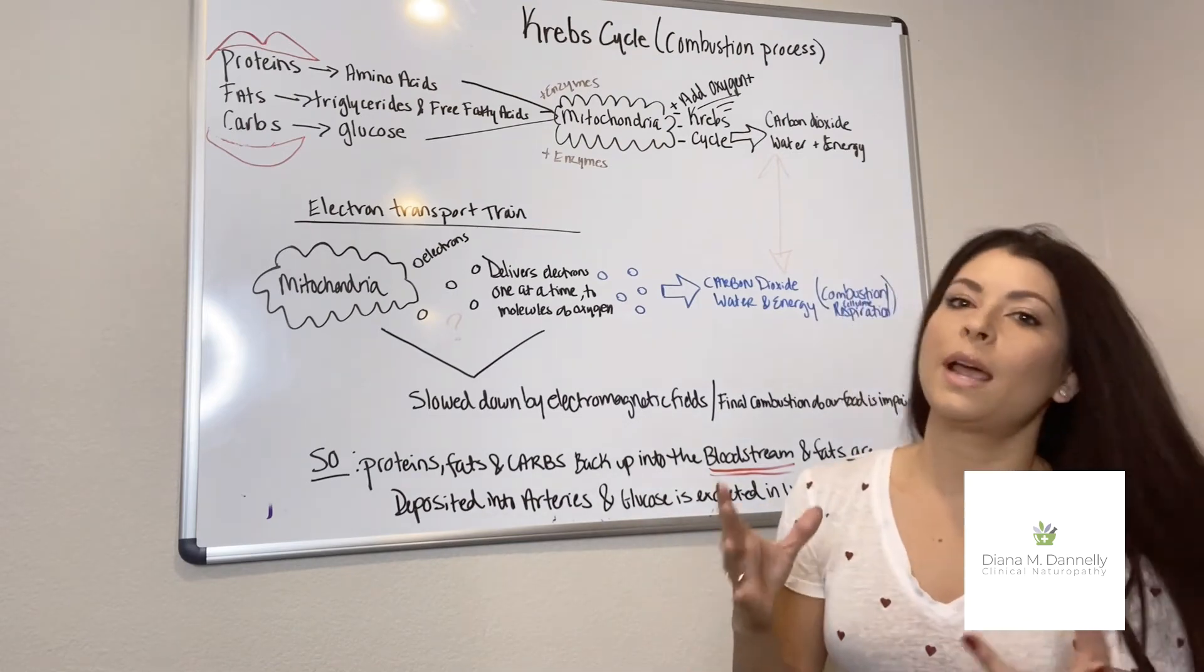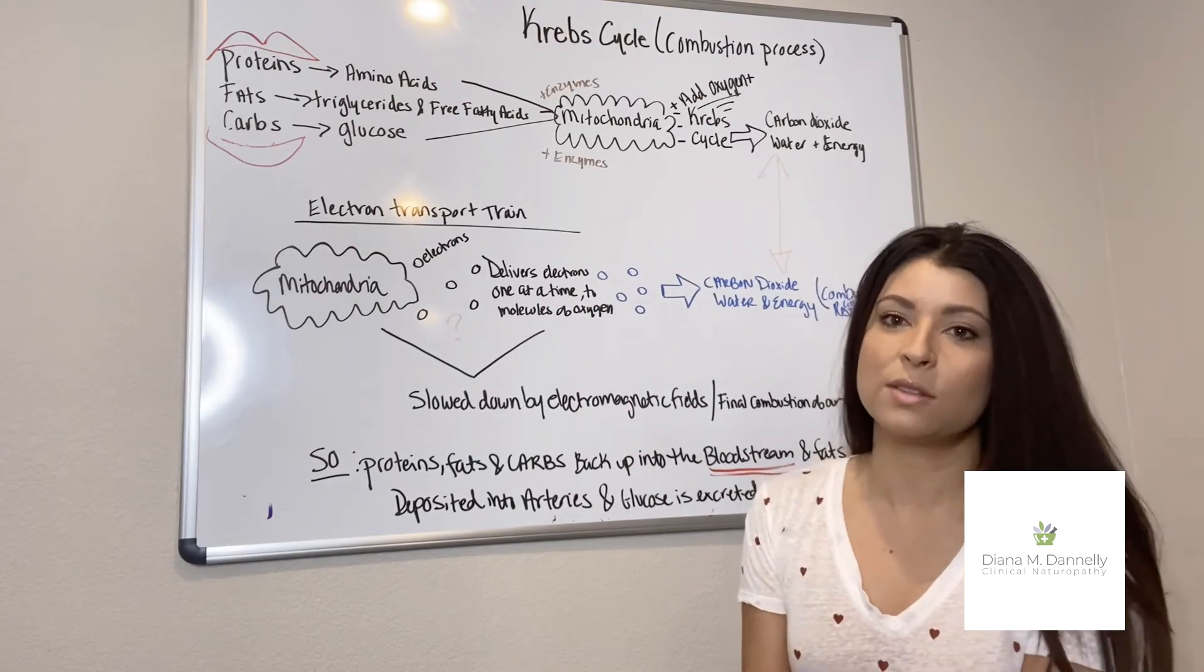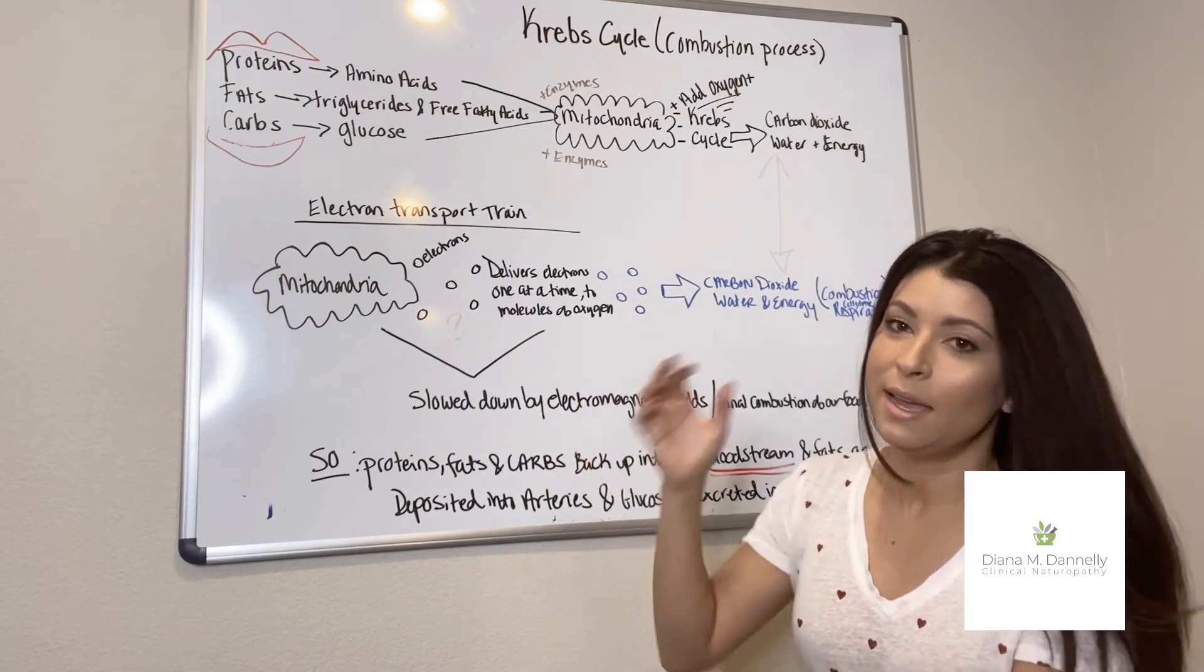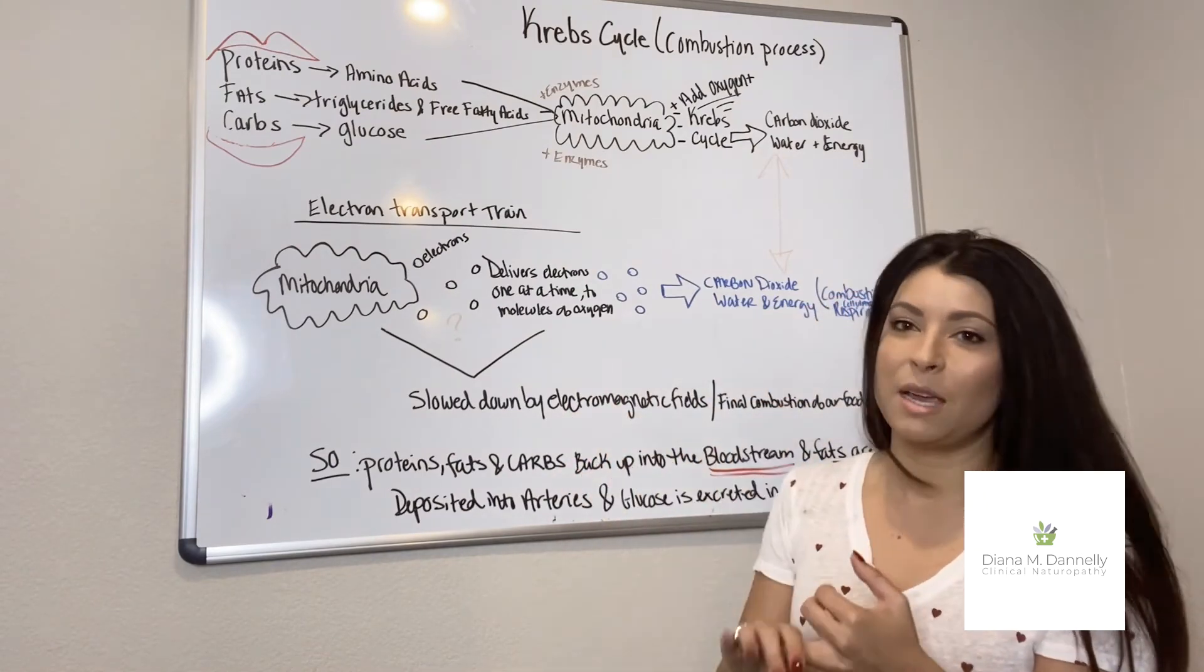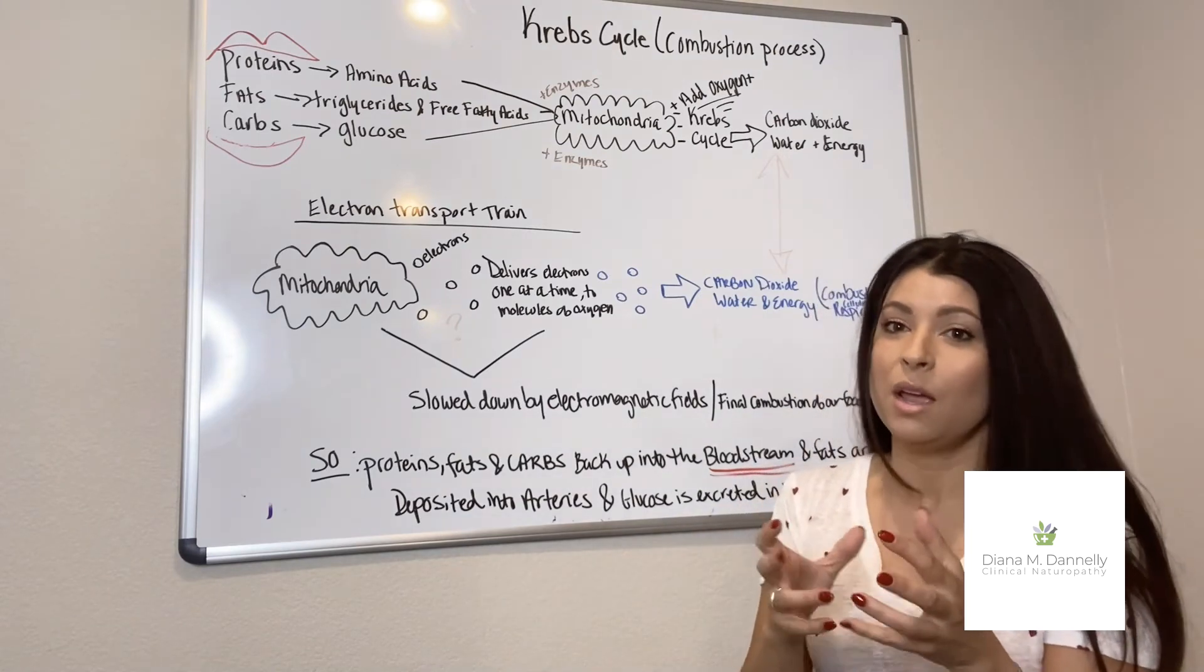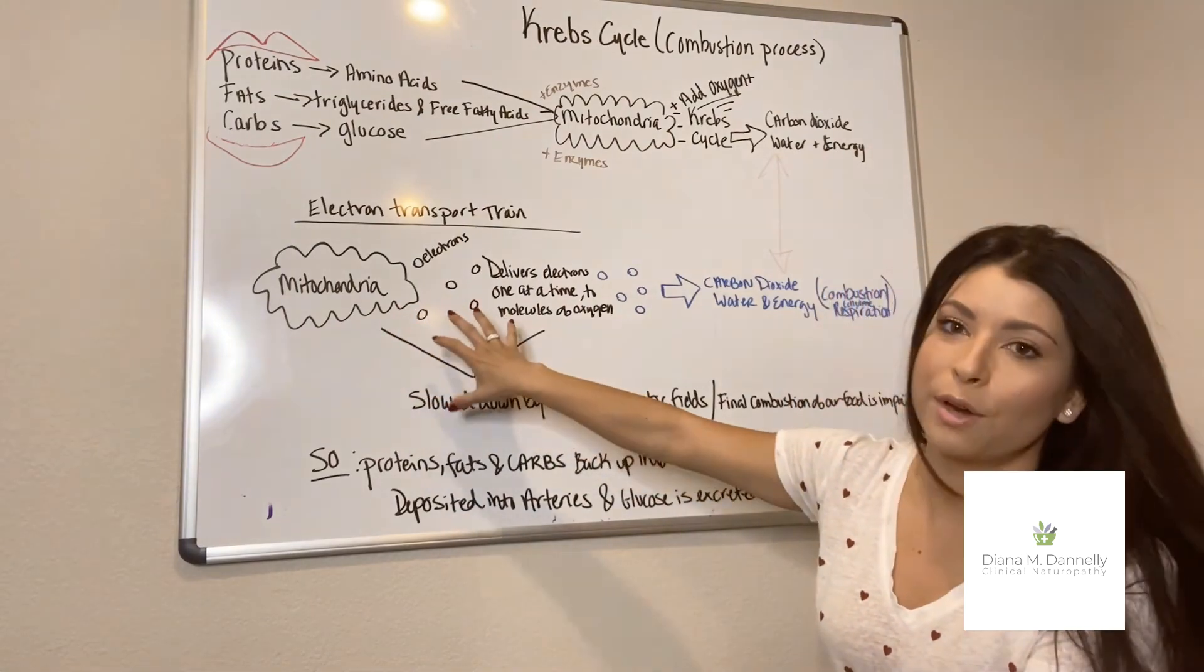So what I'm saying is the disruptive frequencies from electromagnetic fields directly affect your body's ability to work properly and leads to more diseases like heart disease, diabetes, all kinds of things can happen in a negative way from your body not being able to complete this electron transport train properly.